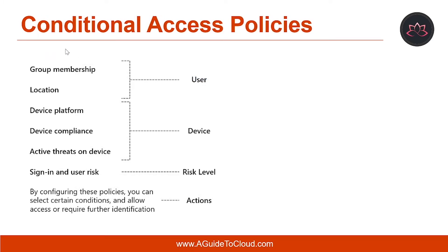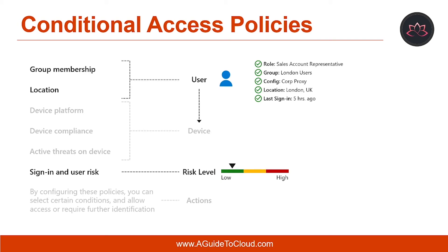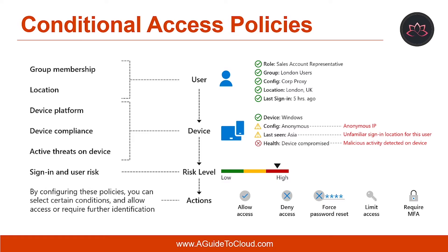Now let's talk about Conditional Access Policies. A Conditional Access Policy is a definition of an access scenario using a pattern — when this happens, then do this. It is important to note that the objective of Conditional Access Policies is not to grant access to a cloud app. In Azure AD, granting access to cloud apps is subject to user assignments. With a Conditional Access Policy, you control how authorized users can access cloud apps under specific conditions. The objective of a Conditional Access Policy is to enforce additional access controls on access attempts to a cloud app based on how an access attempt is performed.